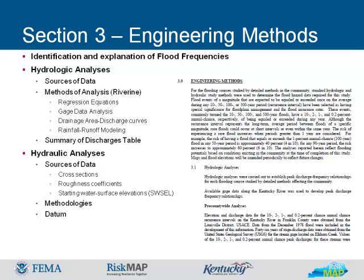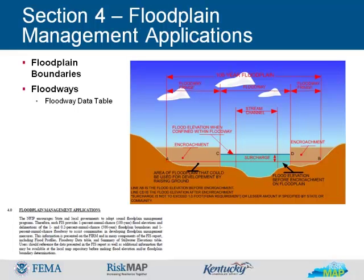Vertical datum is important to ensure that like values are being used when the information in the flood insurance study is compared to other vertical data. In Kentucky, most studies have been conducted using the North American Vertical Datum of 1988. Floodplain boundaries show the areas that would be inundated by a flood of a given frequency. The FIRM shows the floodplain boundaries for a flood having a 1% annual chance of occurring (the 100-year flood), and in some areas the flood having a 0.2% annual chance of occurring (the 500-year flood). The section indicates the scales, contour intervals, and dates of the topographic maps used to delineate the floodplain. The floodways section defines the floodway and explains how it is used for floodplain management, lists which streams have floodways, and describes how the floodways were determined. The floodway data table presents the results of the floodway analyses at the cross sections shown on the flood maps.